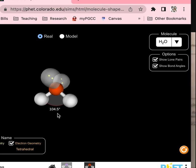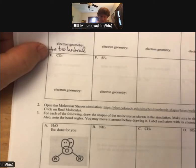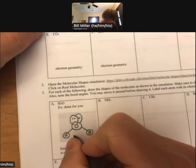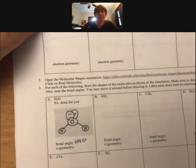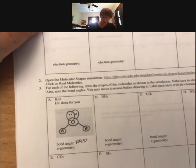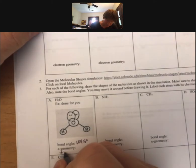And go ahead and fill in. The bond angle is 104.5 degrees. What we would typically call less than 109.5. And the electron geometry is still tetrahedral.